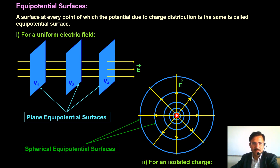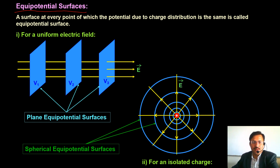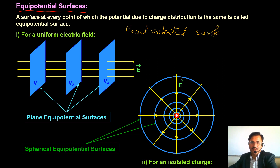Today we are going to deal with the next topic which is equipotential surface. The question is: what is an equipotential surface? From the word itself, we can say equal potential surface — a surface at which every point has equal or same potential. That is termed as an equipotential surface.